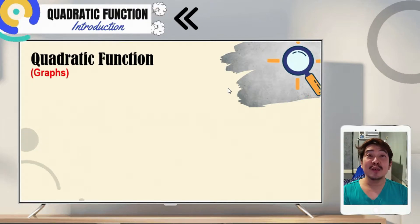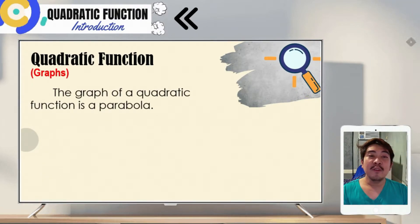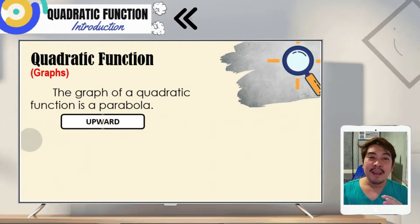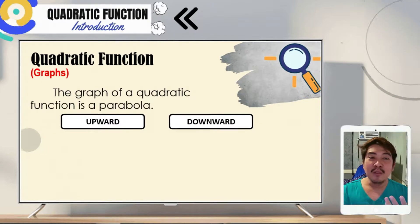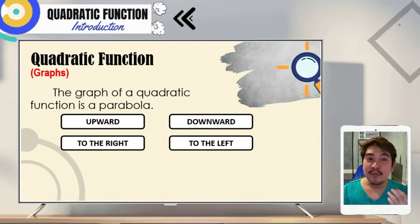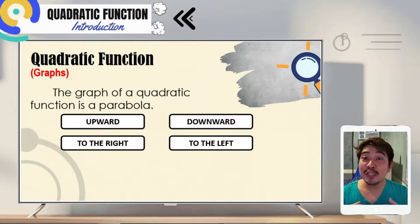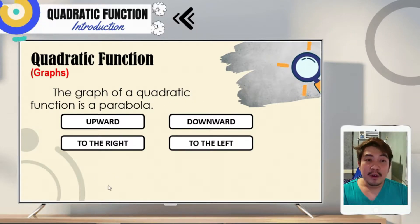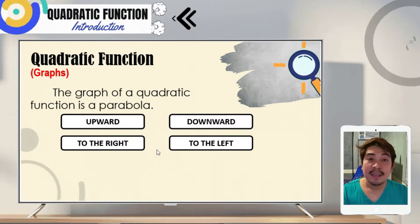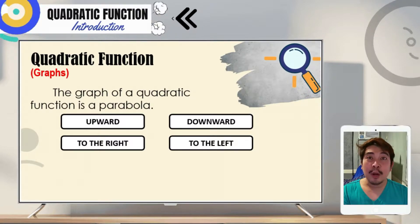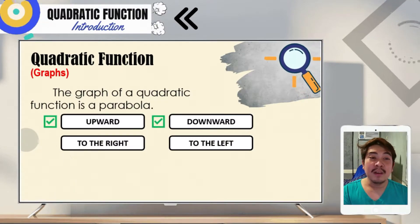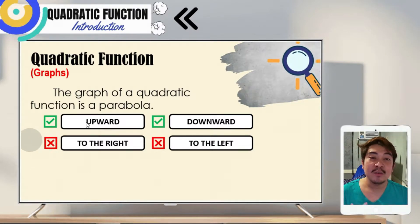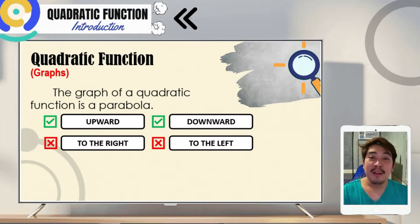Let us now go to quadratic functions in terms of graphs. The graph of a quadratic function is a parabola — a U-shaped graph. The parabola can open upward, downward, to the right, or to the left. We will be considering two of these four: parabolas that open upward and downward are considered quadratic functions. We will not consider parabolas that open to the left and to the right.